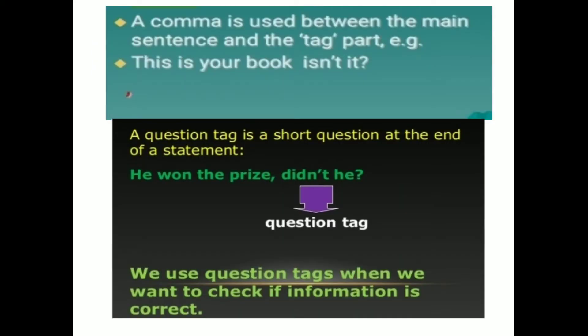A comma is used between the main sentence and the tag part. For example: 'This is your book, isn't it?' A question tag is a short question at the end of a statement. For example: 'He won the prize, didn't he?'